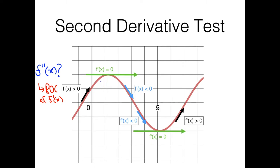Let's look at the max first. Around the maximum, notice how the first derivative is initially positive, then it goes to zero, and then it becomes negative. So essentially around our maximum, our first derivative has gone from positive to zero to negative — it is decreasing. Therefore, the sign of our second derivative around that maximum is less than zero; it's going to be negative.